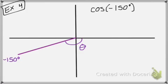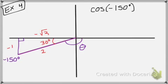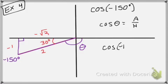Here I'm given a negative angle, but it doesn't matter — we still follow the same steps. Create a right triangle. My reference angle is going to be 30; remember it's always positive. Mark it up: negative 1, 2, negative root 3 — negative because it's going down and to the left. Hypotenuse is always positive. The ratio for cosine is adjacent over hypotenuse, so the cosine of negative 150 degrees is negative root 3 over 2.